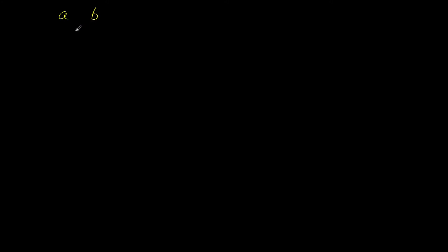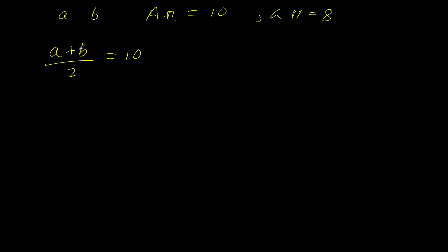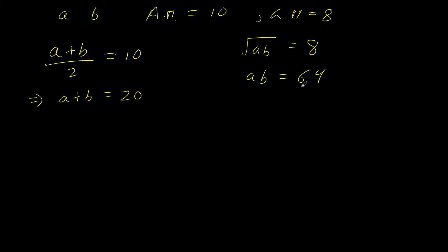Let us solve a quick example. For two numbers A and B, the arithmetic mean is 10 and the geometric mean is 8. Find A and B. From AM: (A + B)/2 = 10, so A + B = 20 (equation 1). From GM: √(AB) = 8, so AB = 64 (equation 2).